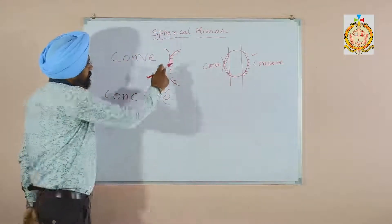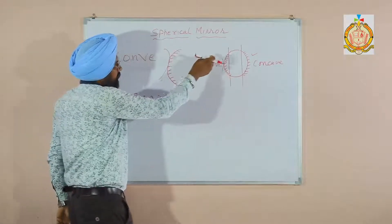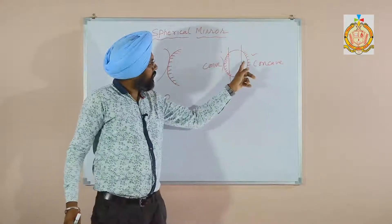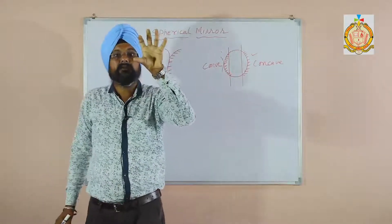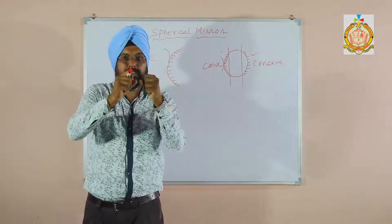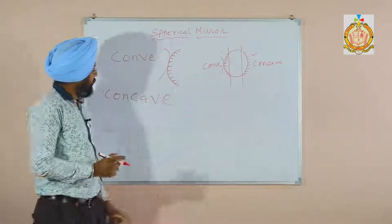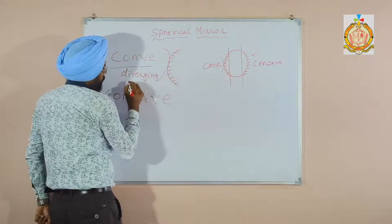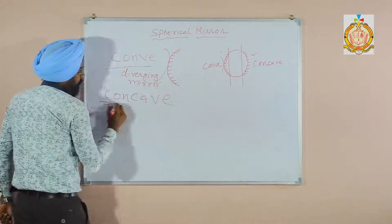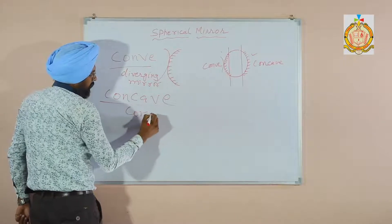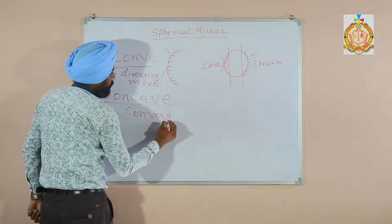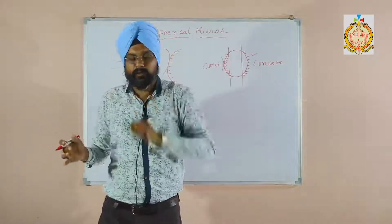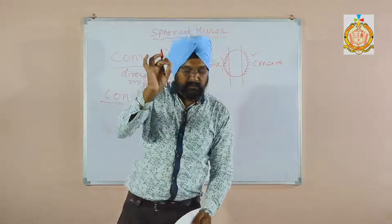The convex mirror is silvered from the inside and it bulges outward, meaning reflection is at the outside — it is a diverging mirror. In the concave mirror, it is a converging mirror — converging means it bends the rays, it converges the rays. The other name of the concave mirror is converging, meaning it collects the rays and focuses them at one point. So these are the two main mirrors: concave and convex.